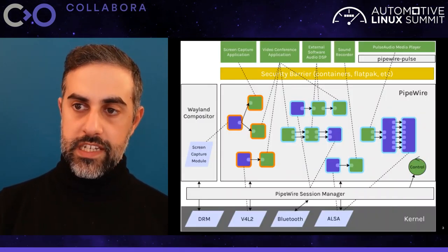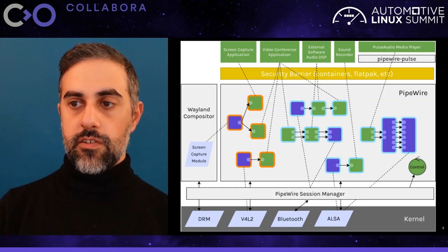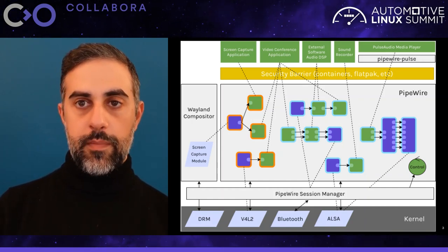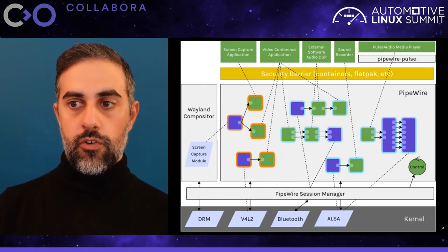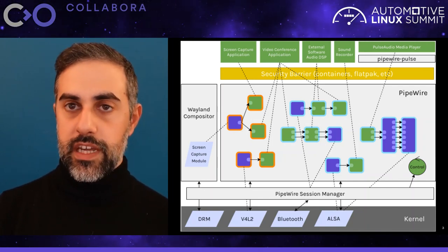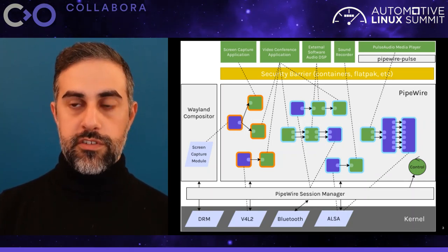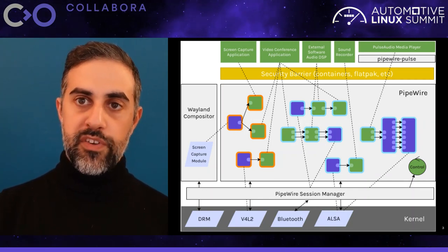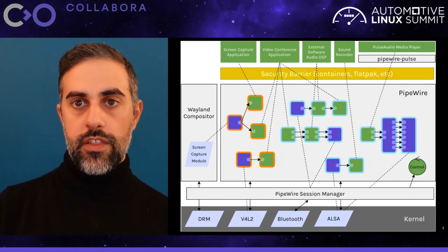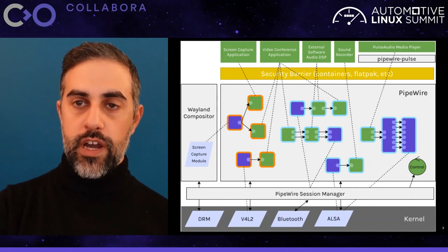Overall, this is how the PipeWire system looks. There are applications — all the green boxes at the top — that connect to PipeWire crossing through various security barriers, be it containers or something else. They connect to PipeWire and create so-called nodes, which are objects that represent the streams of these applications. These nodes then connect to each other and form a pipeline that allows media to flow from one application into another.